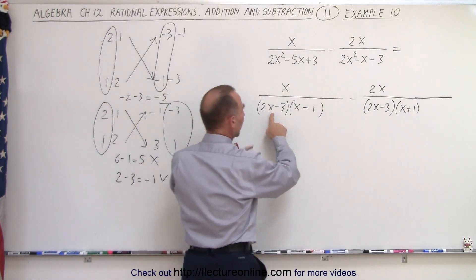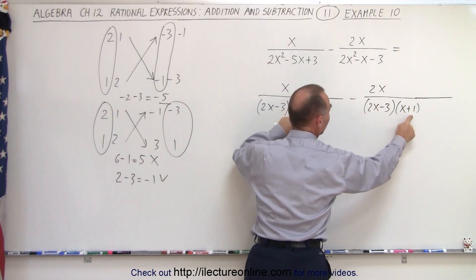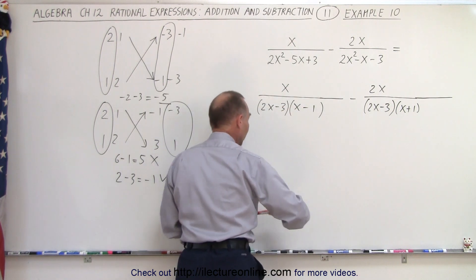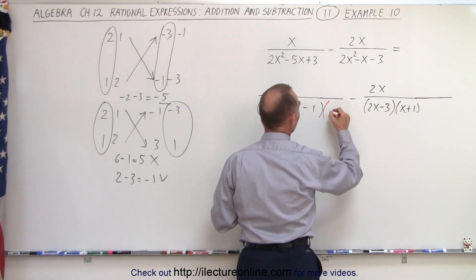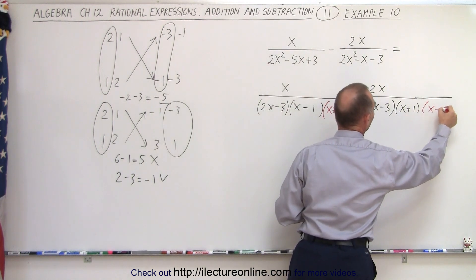Notice we have a 2x minus 3 for both denominators. We have an x minus 1, which is missing here, and an x plus 1, which is missing here. Which means we're going to multiply this denominator by x plus 1, and we're going to multiply this denominator by x minus 1.